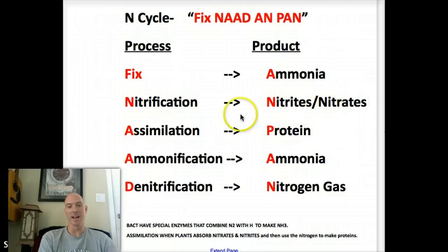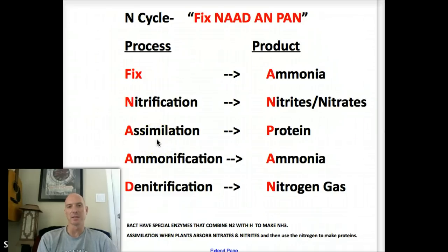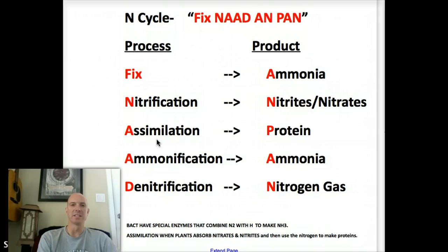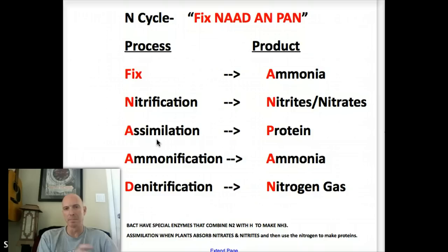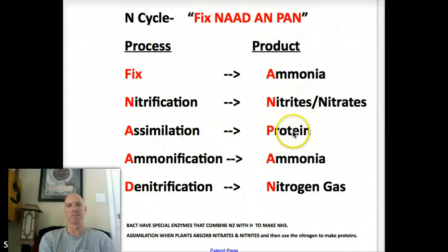Once it's there, the plant sucks it up in a process called assimilation — I didn't mention that in part one, but it's a word you want to know. For all you Star Trek fans, maybe you already know it — that's where I first learned it. Essentially, the plants are sucking up that nitrate, undoing it, and taking that nitrogen to make amino acids and proteins, basically incorporating it into their body. They're assimilating it, and proteins are the product. And now it's in the food chain.